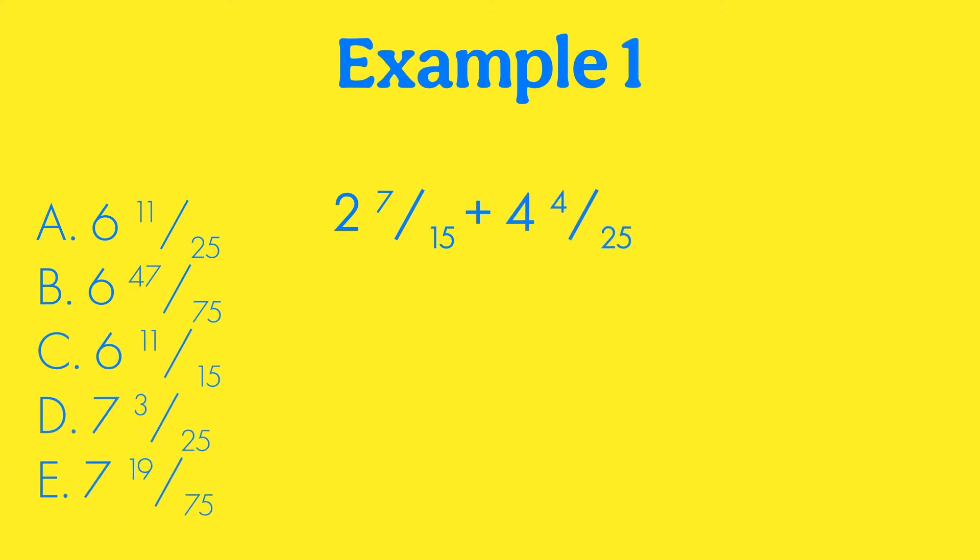In this example, we see 2 and 7/15 plus 4 and 4/25, and then we have five answer choices below. So what we are going to do is we are going to literally plug this into our calculator. But we can't write 2 and 7/15 in our calculator because our calculator doesn't do things like that. But what we can do is write 2 plus 7 divided by 15 plus 4 plus 4 divided by 25. And then when I do that, I get an answer with a decimal. I get 6 point and then there's a long decimal afterward.